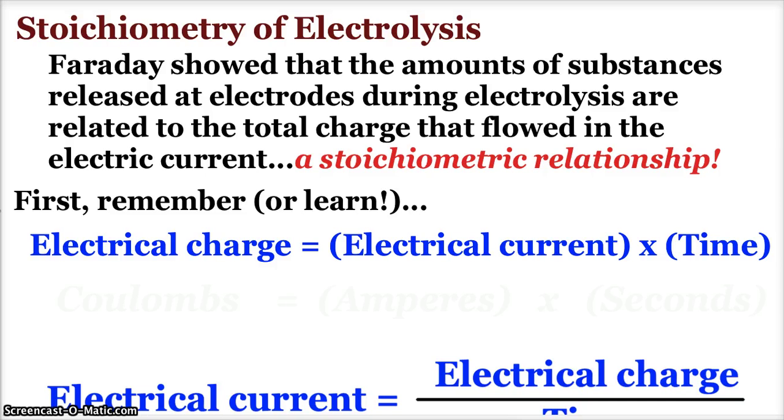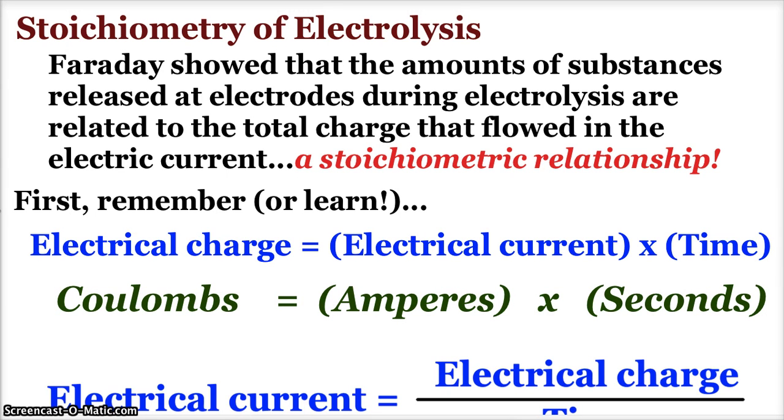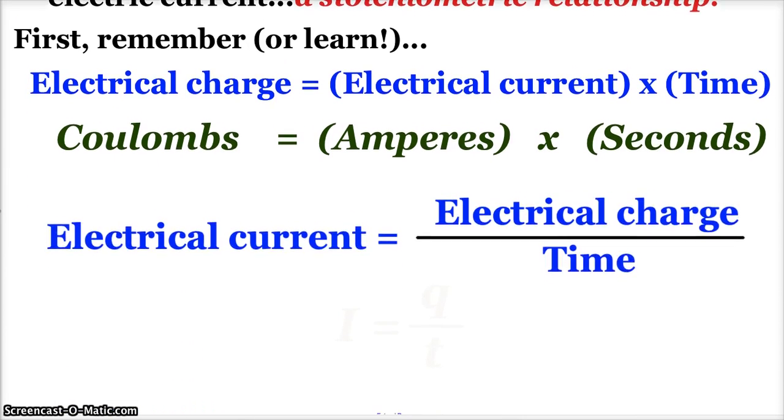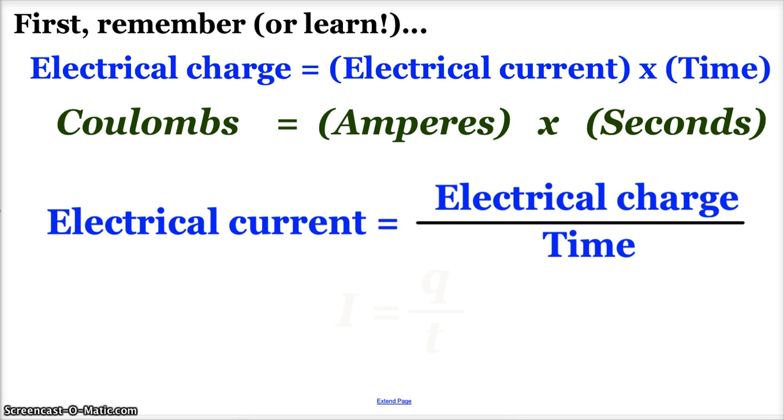First, either remember from physics or ninth grade or some other time, or learn, that our electrical charge is equal to electrical current times time. From a unit's perspective, our charge unit is coulombs, our electrical current unit is typically amperes, and then in order for this to work, our time must be in seconds. Now we typically rearrange this equation and set it up as current equals electrical charge over time. This is the lovely equation that you'll see in your test-taking packet: I stands for electrical current, Q is for charge, and T is for time.